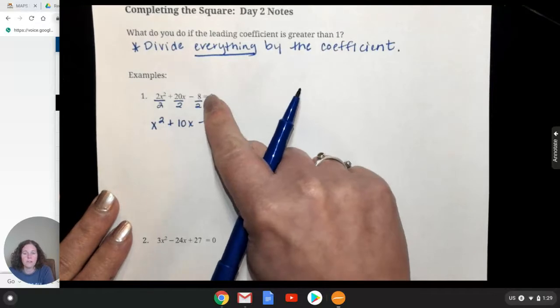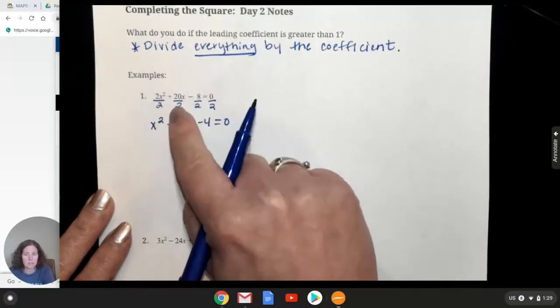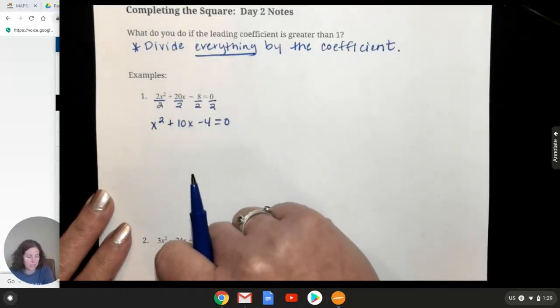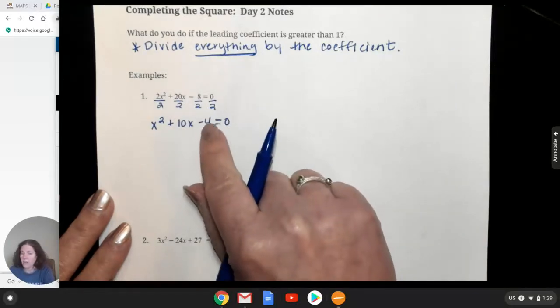All right, so now don't forget that zero divided by two is still zero. Okay, that sometimes is a common mistake. But if you divide everything else, you can see that we still have nice, neat numbers. All right, so now we'll go through the process of completing the square.